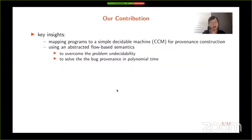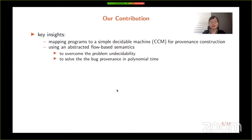In order to improve the utility of bug finding tools, our work devises a new technique giving insight into the causal connection between the root cause of a bug and the reported line number to end users. We will map an input language into a simple decidable machine called the Constant Copy Machine, the CCM, for provenance construction. We will also use an abstracted flow-based semantics to overcome undecidability and solve bug provenance in polynomial time.